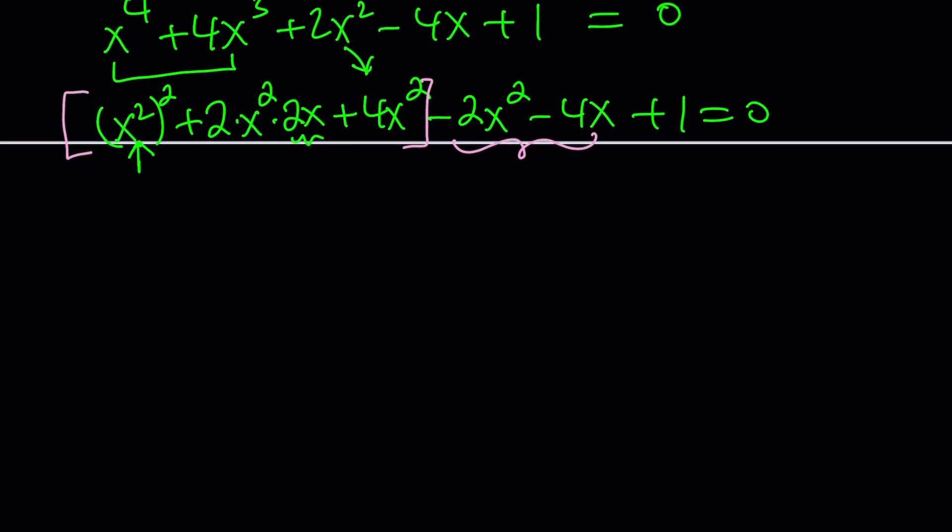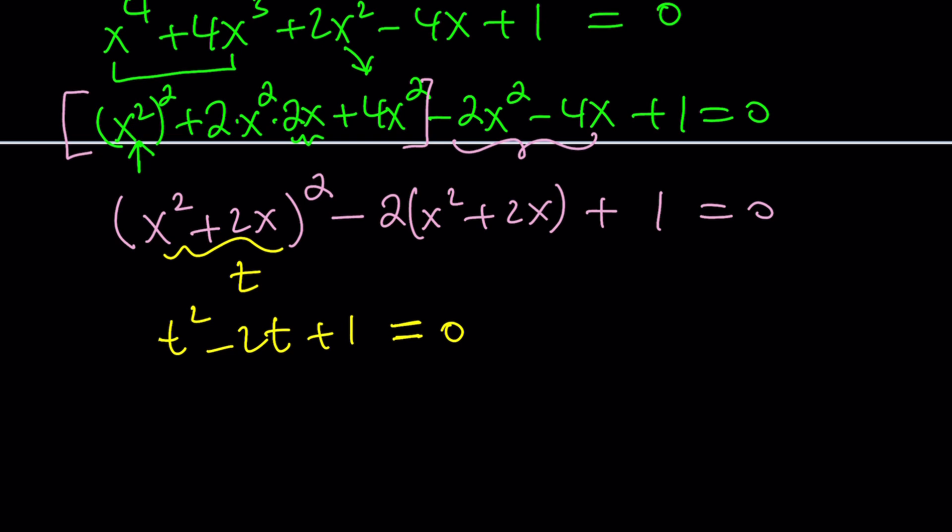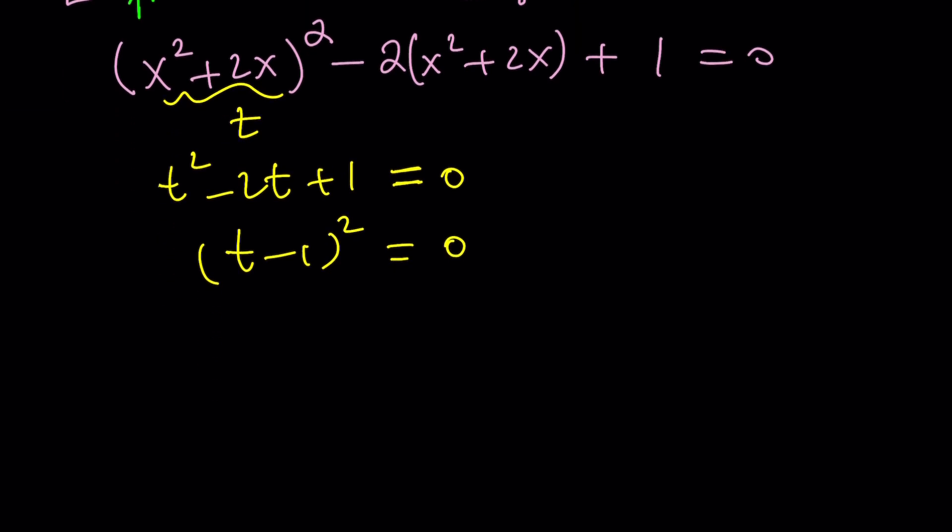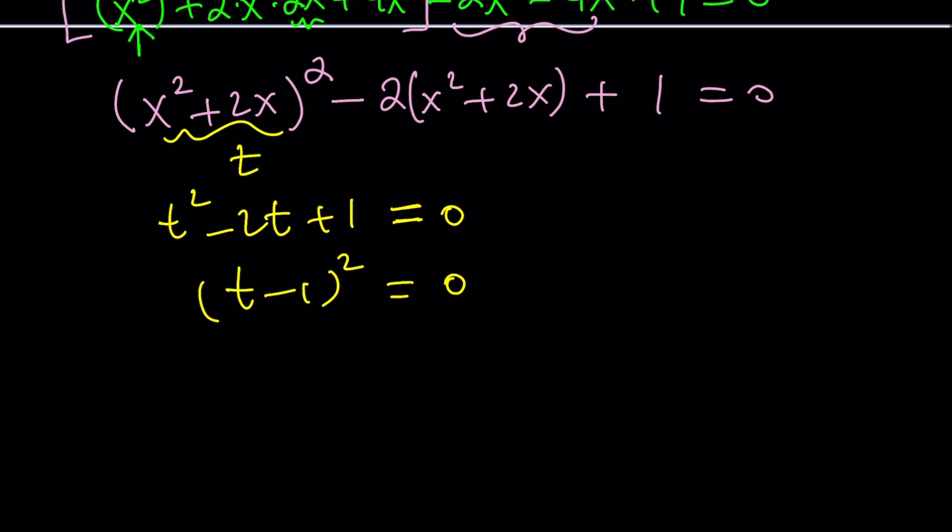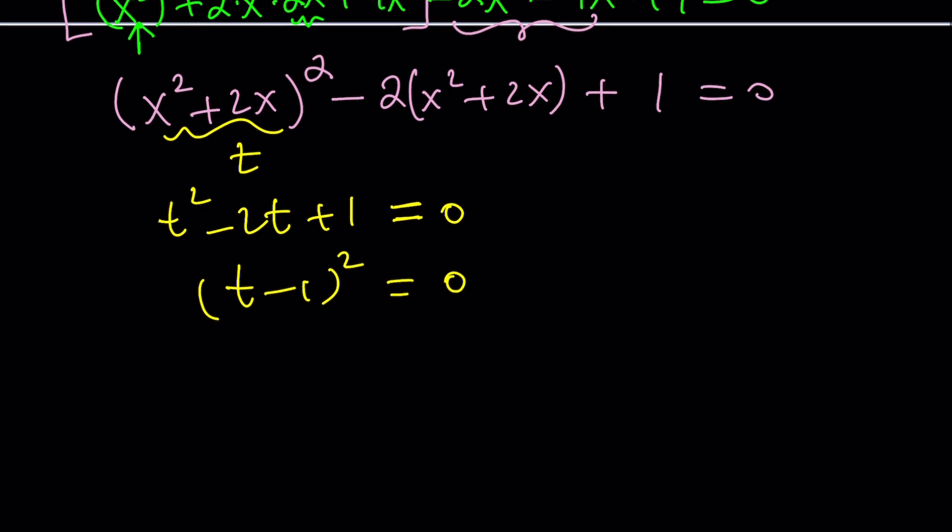And now we can go ahead and put these three terms together because they will make a perfect square. And then we can factor these two and the rest will be just easy to do. Now, the first three terms can be written as (x² + 2x)² minus 2 is a common factor. You're going to get (x² + 2x). Plus 1 equals 0. Now, if you go ahead and call this t or y or whatever, coffee, whatever you like, then we get something like t² - 2t + 1, which becomes (t - 1)². That's what I mean by a perfect square. So a perfect square within a perfect square.